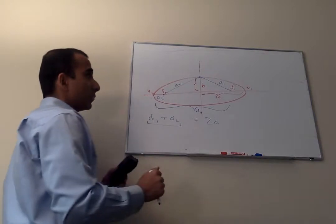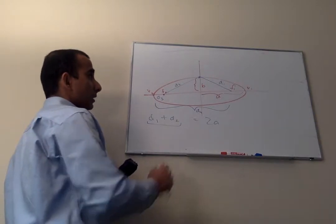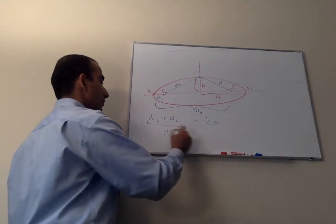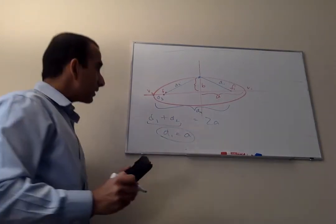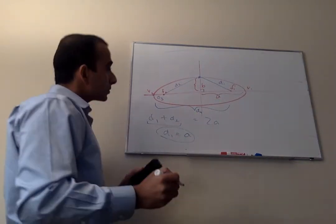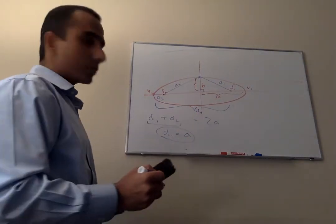So if D1 is equal to D2 and D1 plus D2 is equal to 2A, then we know that D1 is equal to A. And that's the key to solving our ellipse equation for the focal distance.